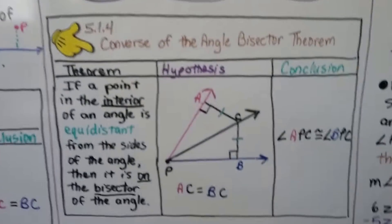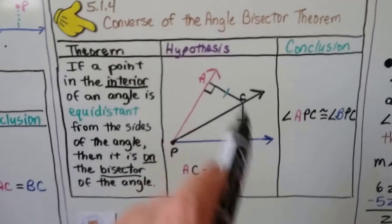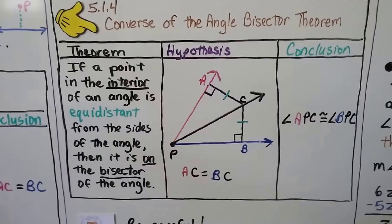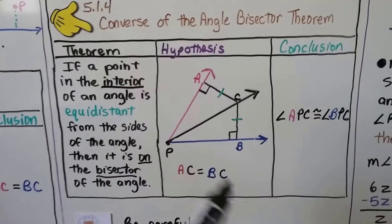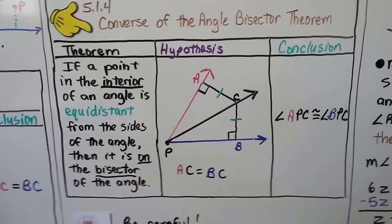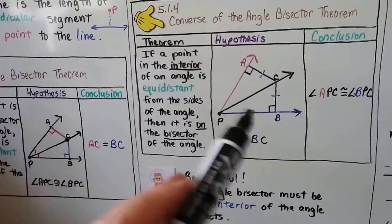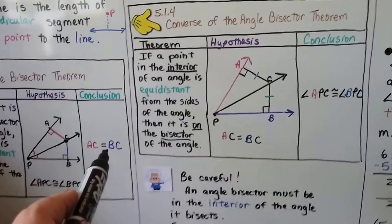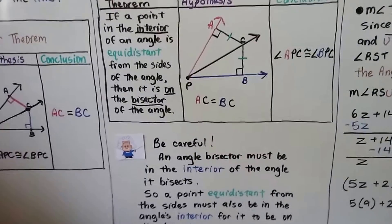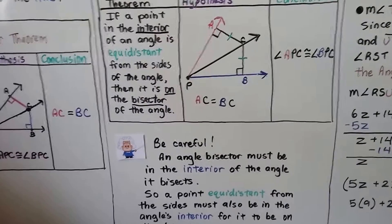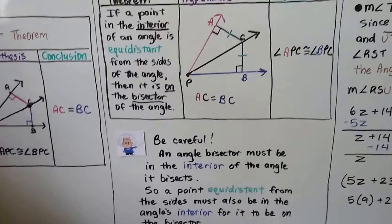Here's the converse of the angle bisector theorem. It says if a point in the interior of an angle is equidistant from the sides of the angle, then it is on the bisector of the angle. So AC is equal to BC, and angle APC is congruent to angle BPC. The converse of a theorem swaps the hypothesis and conclusion — the conclusion AC equals BC becomes the hypothesis. Be careful: an angle bisector must be in the interior of the angle it bisects, so a point equidistant from the sides must also be in the angle's interior.